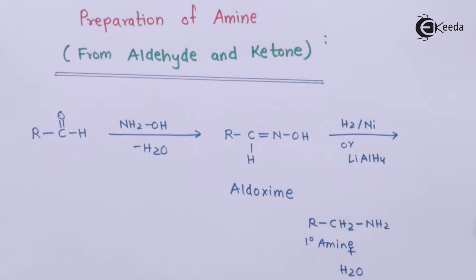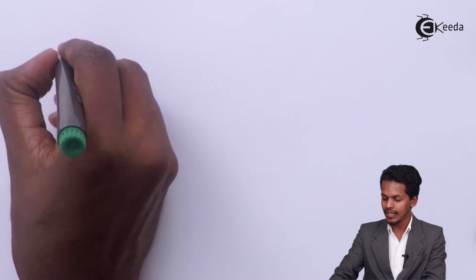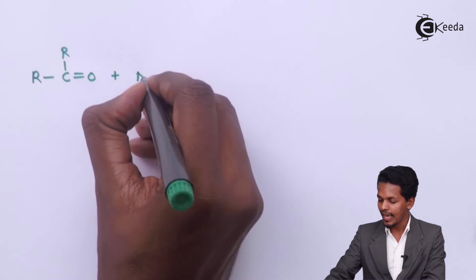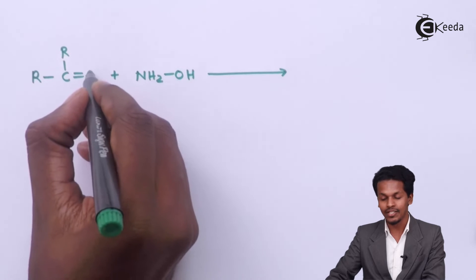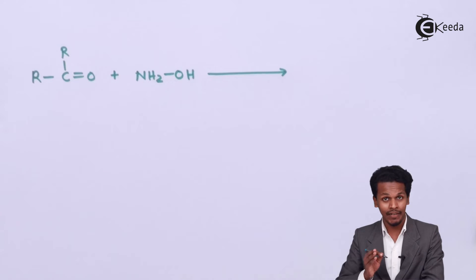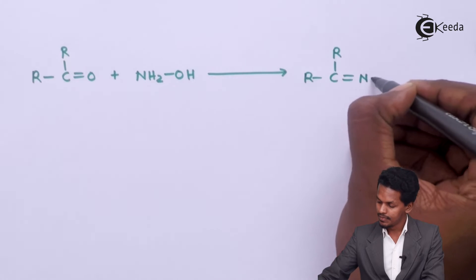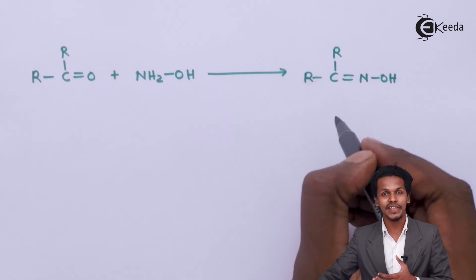Now let me talk about the general reaction of ketone with hydroxylamine to form an amine. Consider a general ketone RCR with a double bond O. When this ketone reacts with NH2OH (hydroxylamine), H2 and O are removed as water. The product we get is an oxime, and since it is obtained from a ketone, it is called a ketoxime.